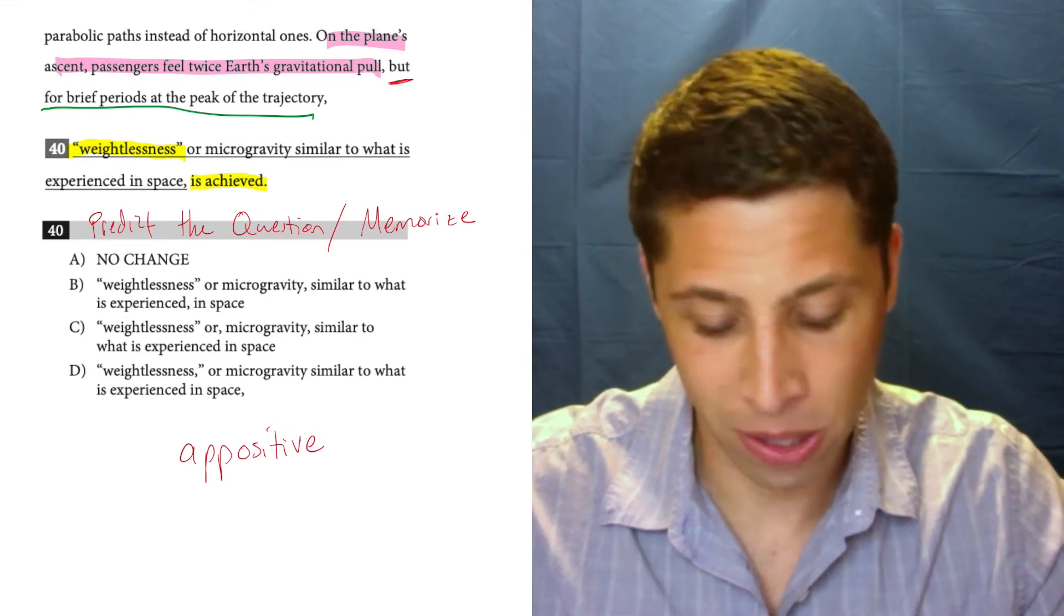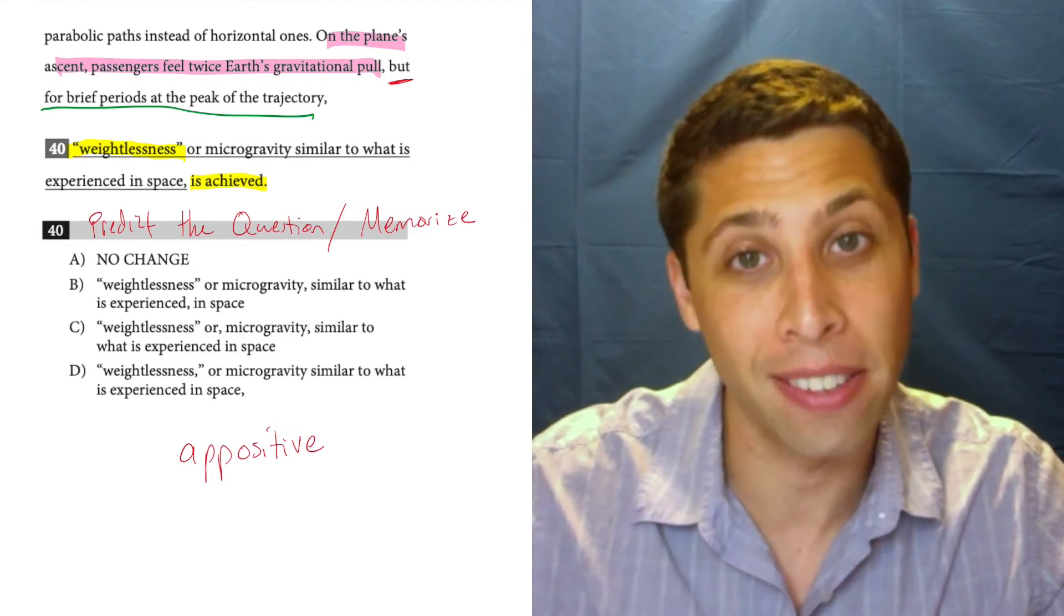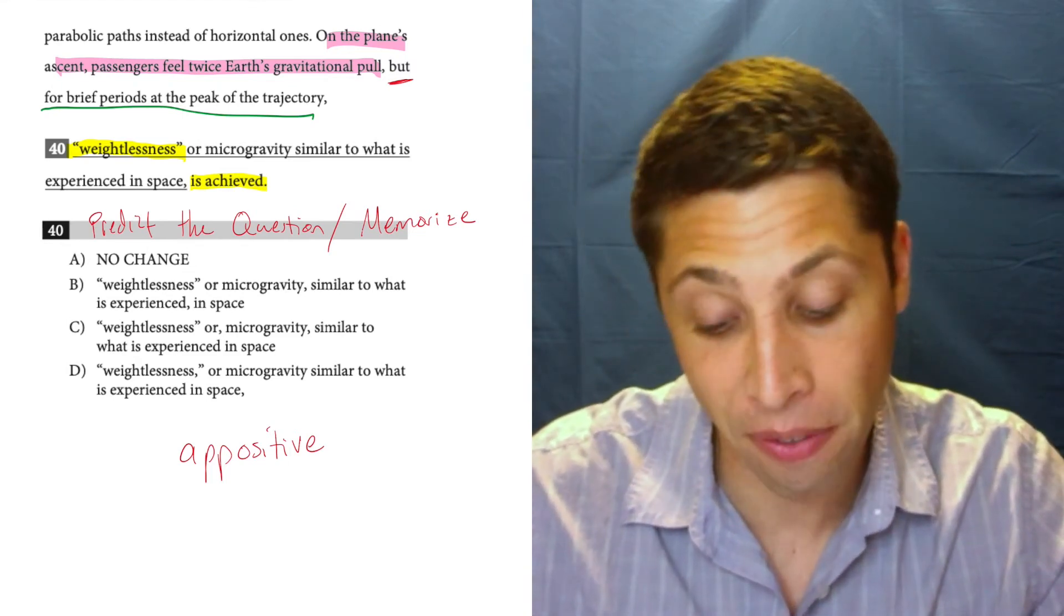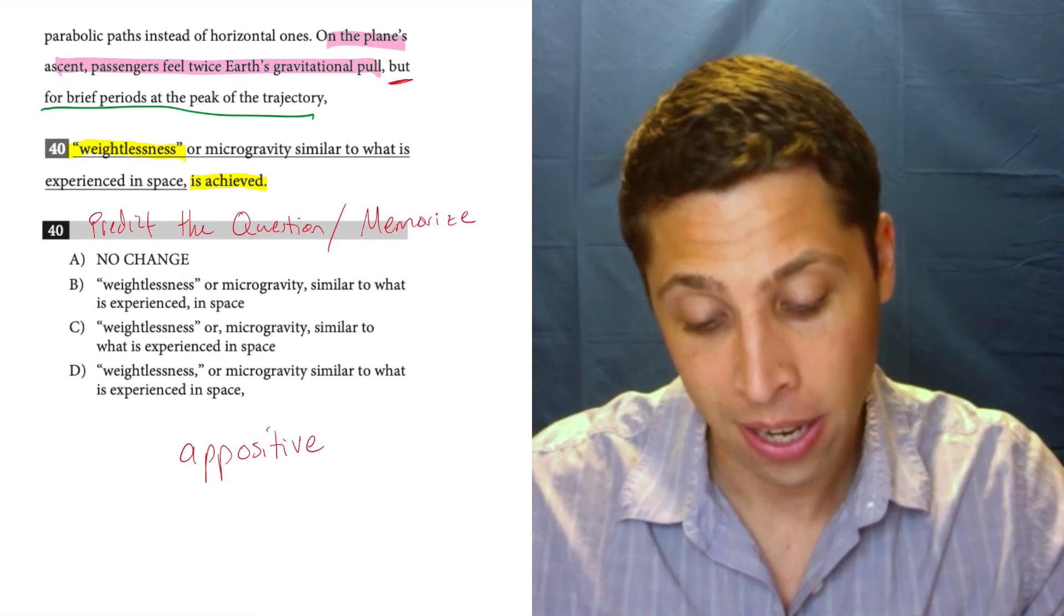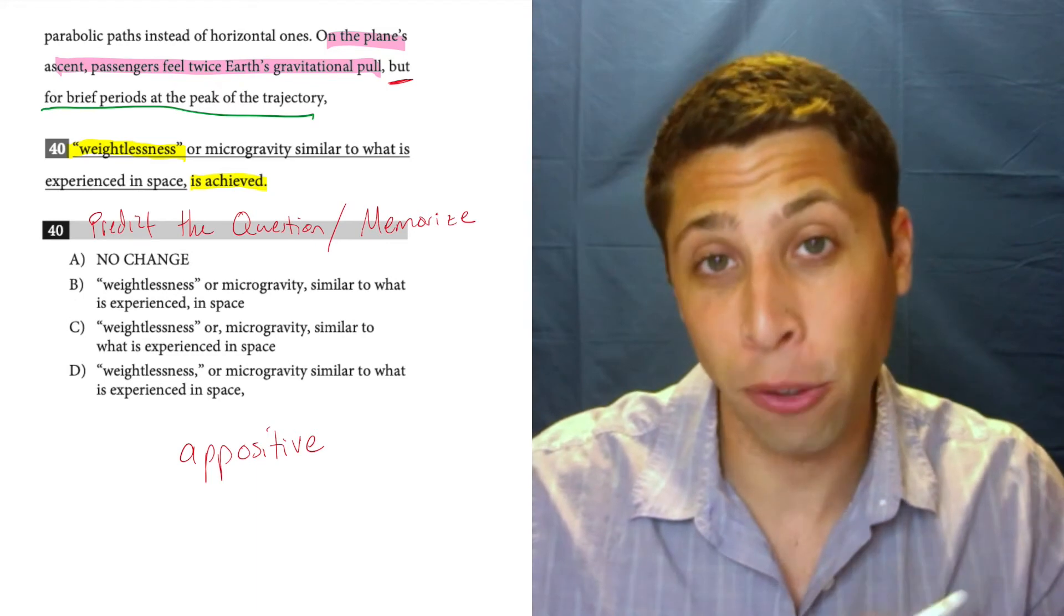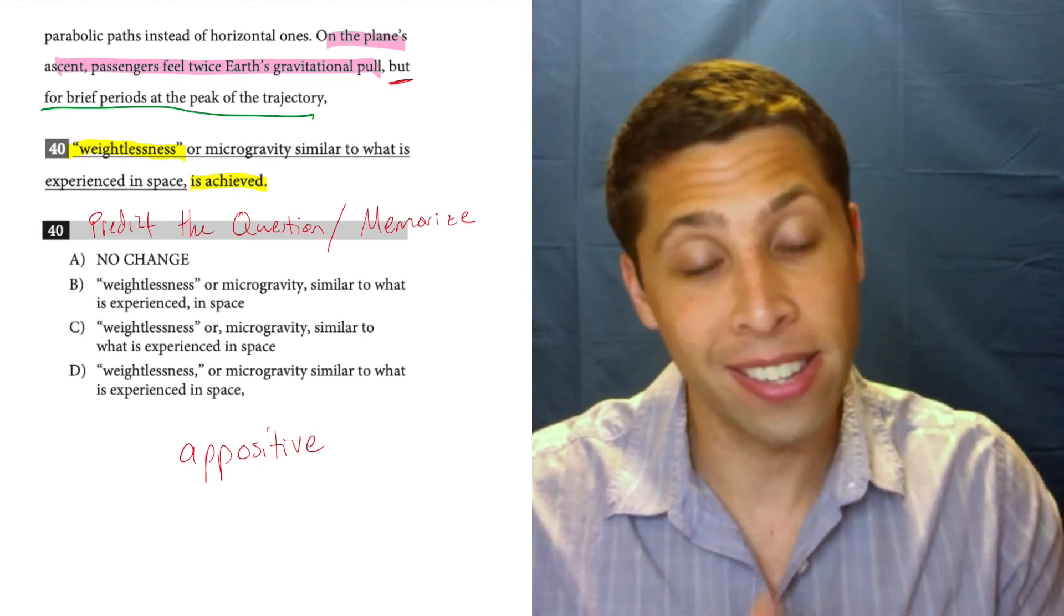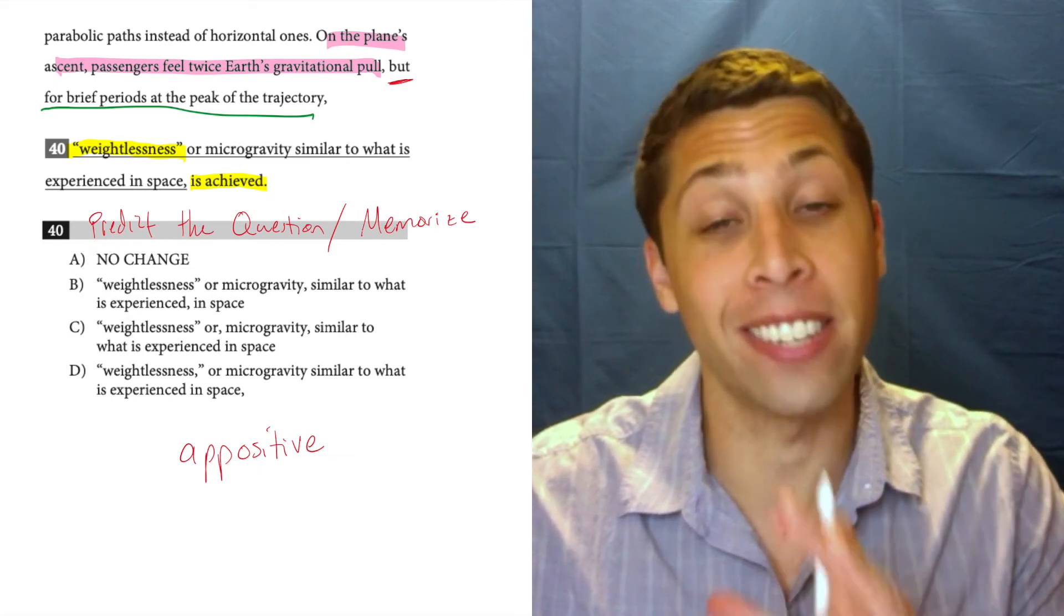So what's that all about? What is this other stuff doing then in between the two parts of the main sentence? Well that's what the appositive is. This is an extra description. It's defining weightlessness for us. And so what we need to do is we need to show using punctuation that this is an extra clause that is not part of the main sentence, that is an interruption.